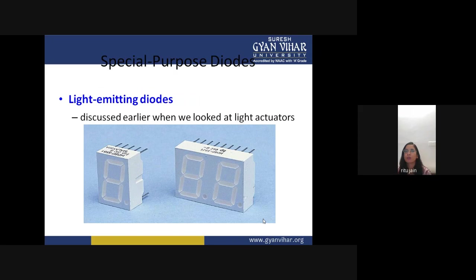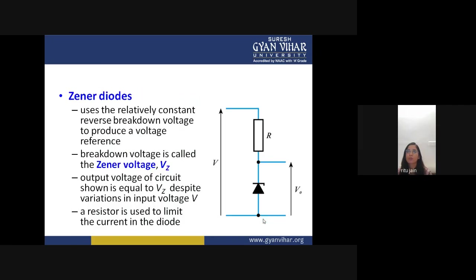There are many types of special purpose diodes, one of which is the light-emitting diode (LED), which was discussed in a previous lecture. Next is the Zener diode, which is very important. Unlike the silicon diode which works in the forward direction, the Zener diode always works in reverse.